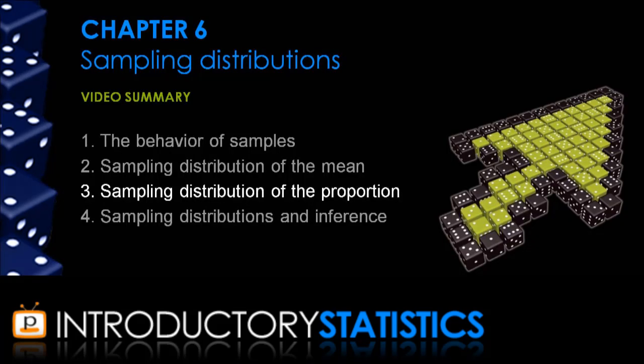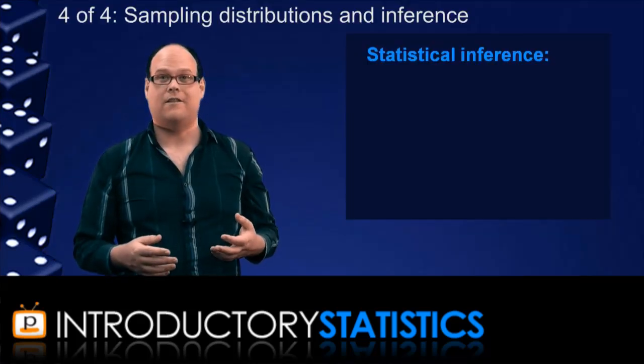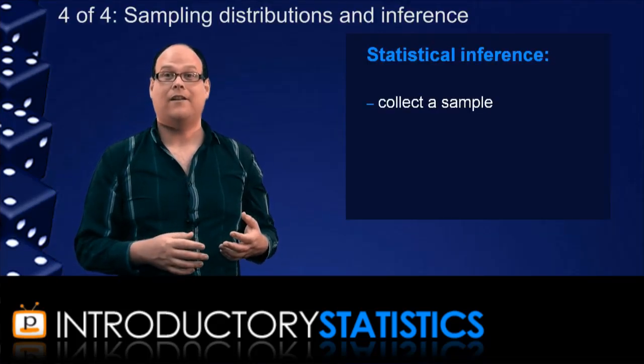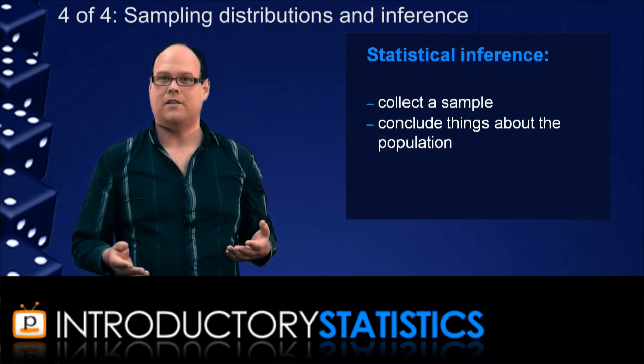So we've covered the second big sampling distribution, the sampling distribution of the proportion. We'll spend the rest of this video talking about how sampling distributions are used in statistical inference, because we actually want to use all this stuff so that we can collect a sample and then conclude things about the population. So how do we do this?